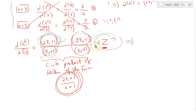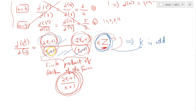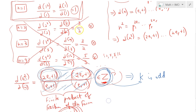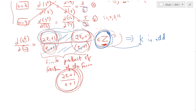To make this fraction an integer, everything in the denominator must cancel with terms in the numerator. But all numerator terms are odd, so after cancellation, only odd numbers remain. Therefore, if d(n²)/d(n) is an integer k, then k must be odd.